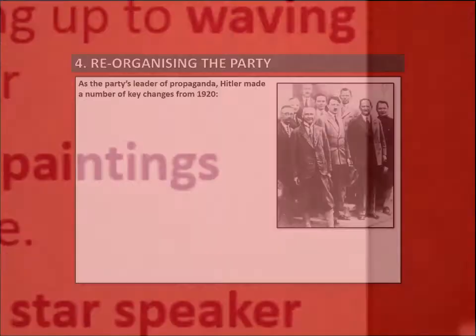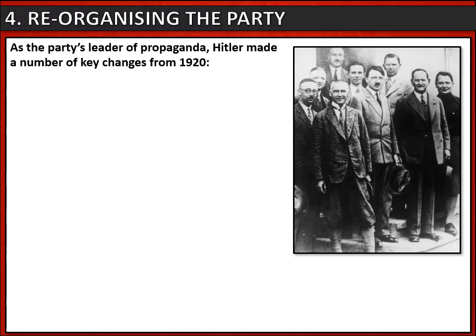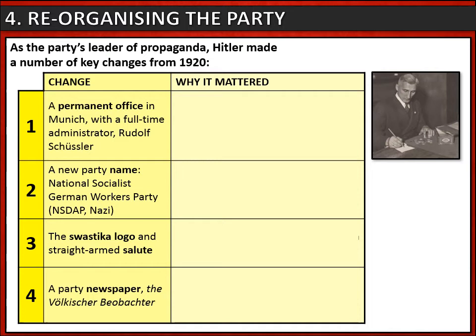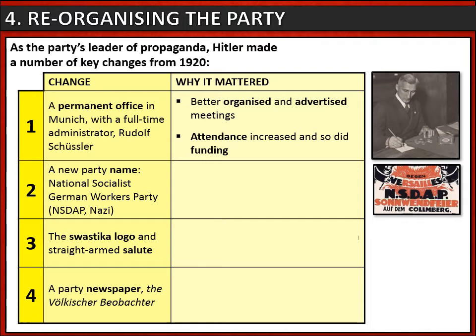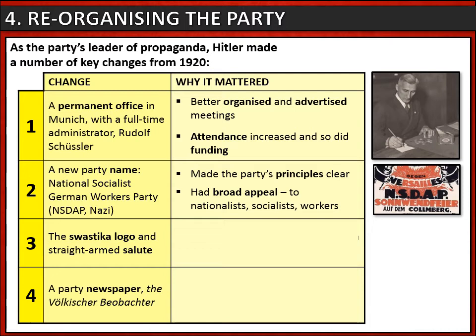Another action taken by Hitler was to reorganize the party. As leader of propaganda, he introduced key changes from 1920 onwards. Firstly, he set up a permanent office in Munich with a full-time administrator, Rudolf Schussler, to handle paperwork — meaning meetings were better organized and advertised, increasing attendance and funding. He changed the party's name to the National Socialist German Workers' Party, NSDAP or Nazi Party, making its principles clear and appealing broadly to nationalists, socialists, and workers alike.